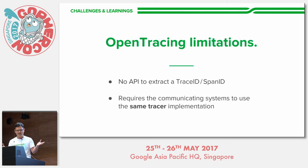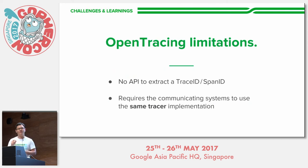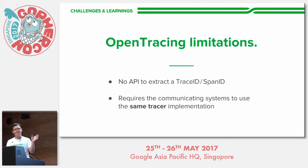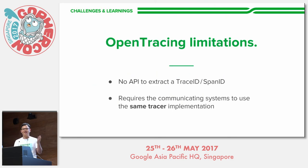Now I'll share some limitations that OpenTracing itself has. Because OpenTracing aims to be vendor-neutral and flexible, there are drawbacks. First, there's no built-in way to extract a trace ID or span ID from OpenTracing and put it into your logging solution. What we did was generate a unique ID, add it as a tag to OpenTracing, and write it to our logs to correlate traces and logs. Second, OpenTracing doesn't define a wire format, so different tracer implementations can use all sorts of different formats to transfer tracing information between services.